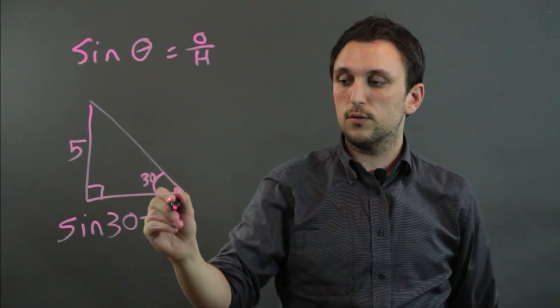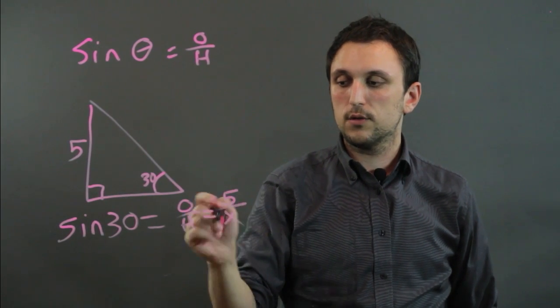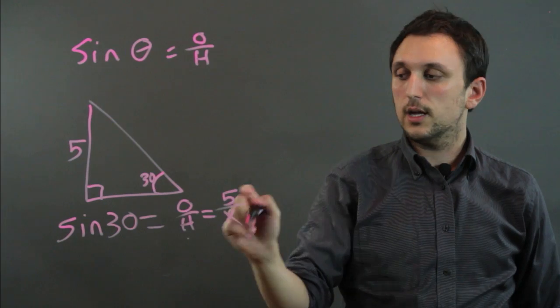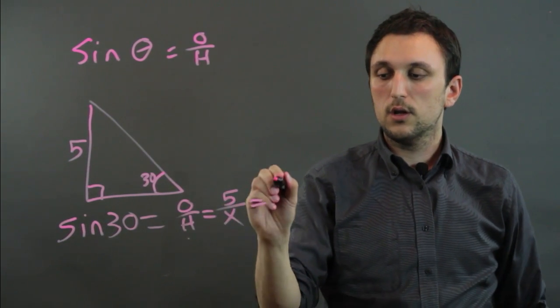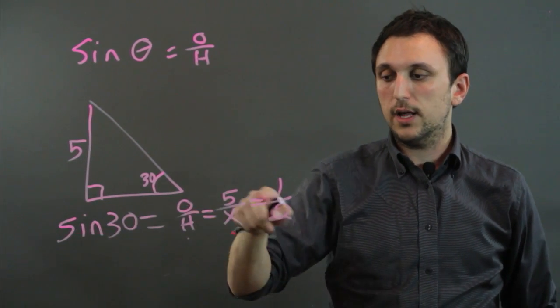equals opposite over hypotenuse which is 5 over x and we know that sine 30 actually equals one half. The way we do that is you plug it into your calculator, you hit 30 and then hit the sine button and you'll get one half.